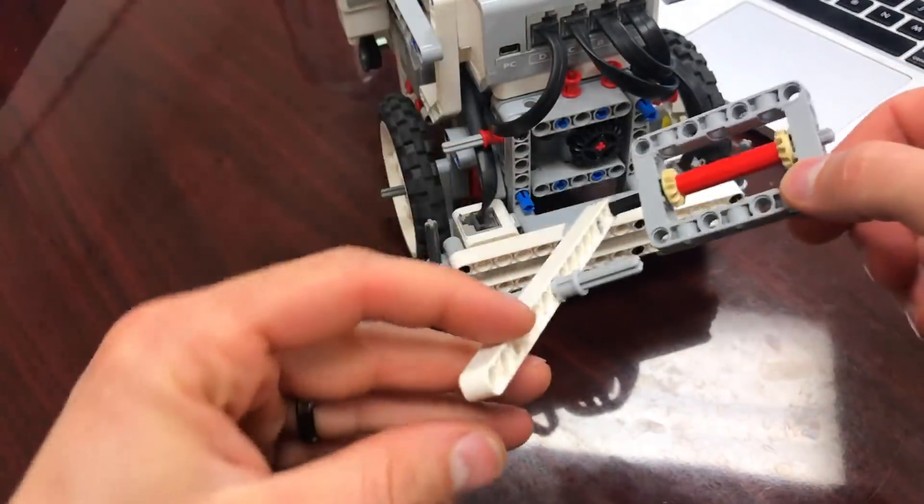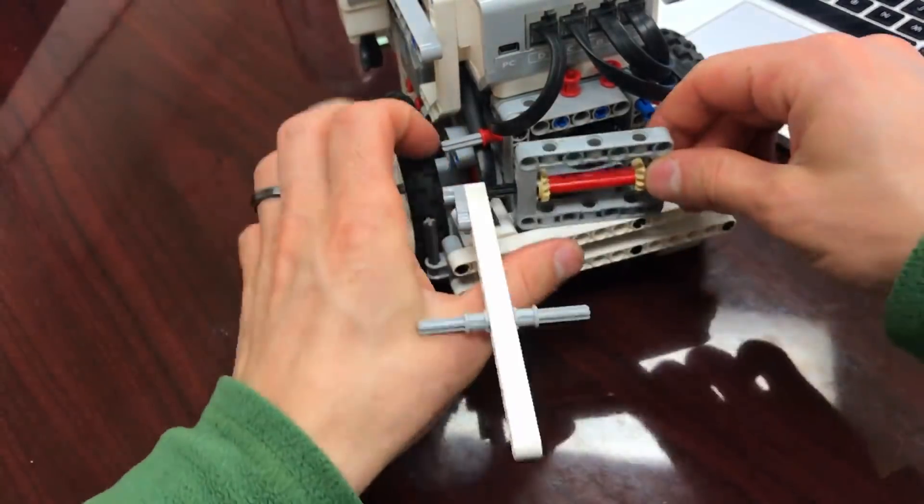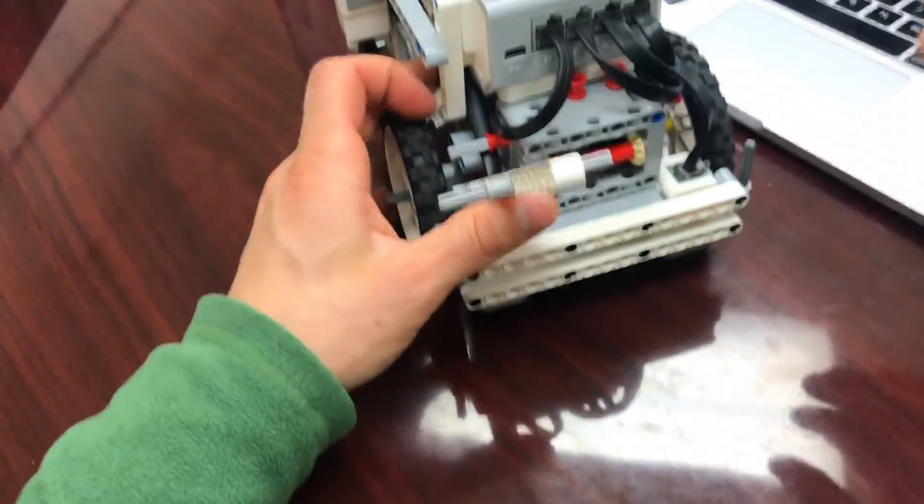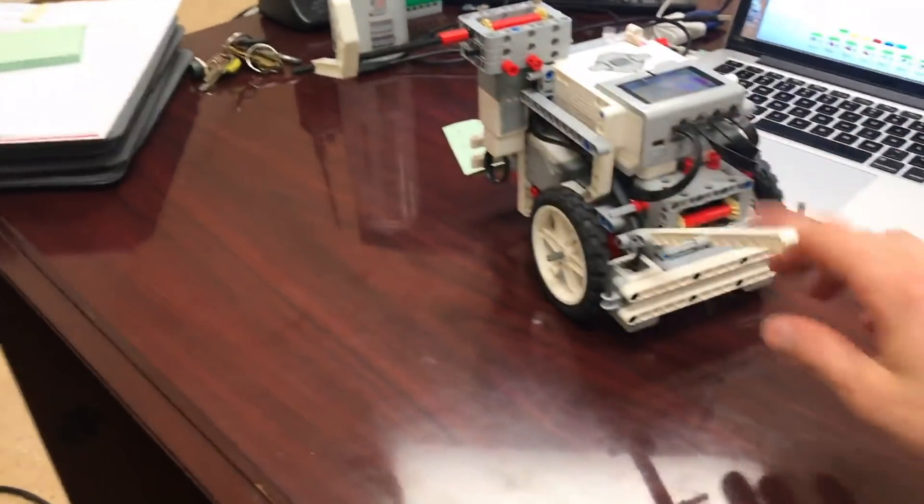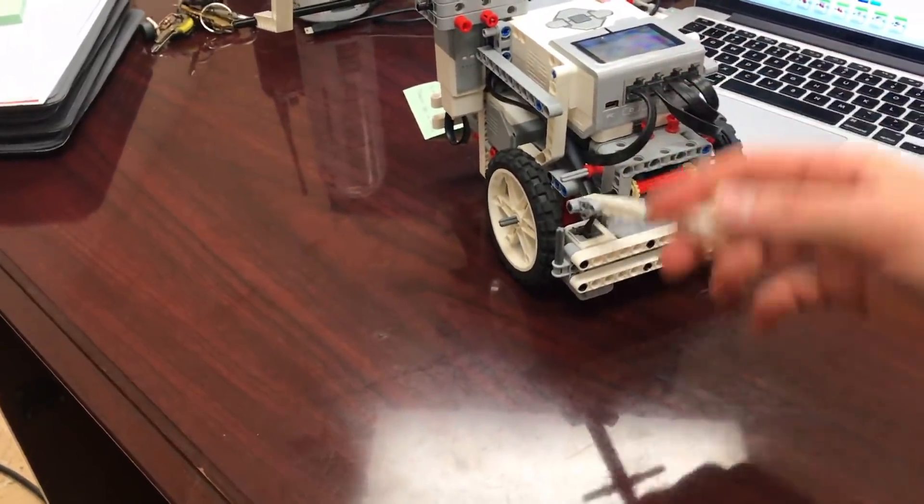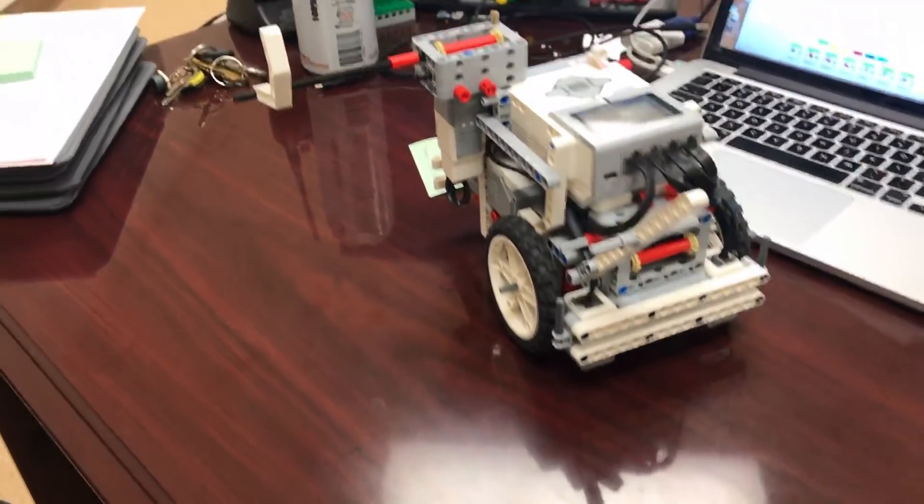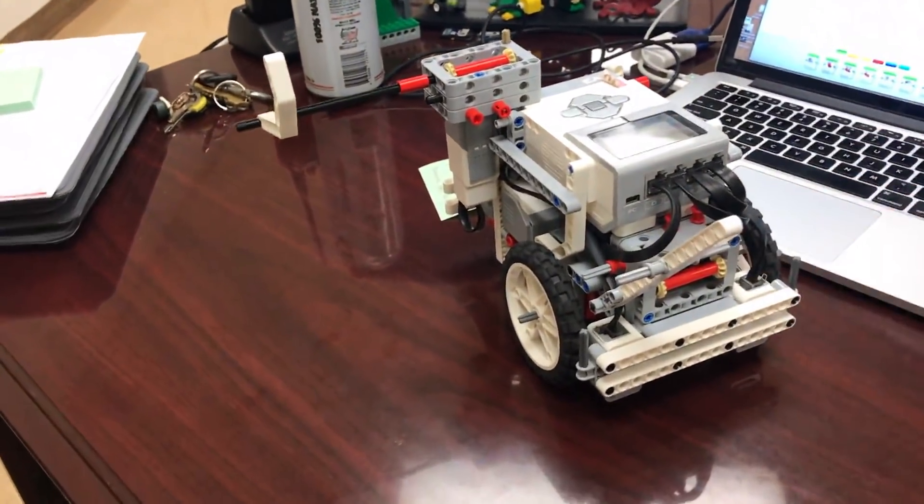This is the attachment from a previous video. Again, it just snaps on the front of the robot just like this. And now here they are both on the robot, the attachment we built today and the attachment we built in a different video, and they're going to work together to complete this mission.